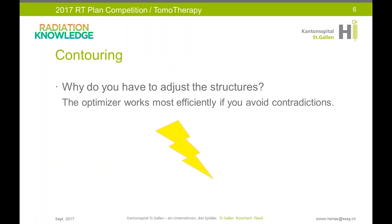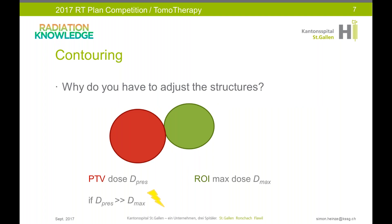Starting with the contouring: you mostly have to adjust structures because the optimizer works most efficiently if you avoid contradictions. Let me show you two examples of how to adjust. If the OAR structure is close to the target and the prescribed dose for the target is much higher than the maximum allowed dose for the OAR, you have a contradiction. In this case, you have to crop your target structure to reach the goal at the OAR.